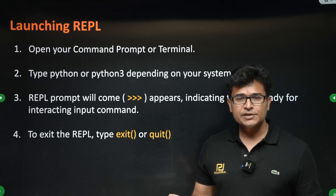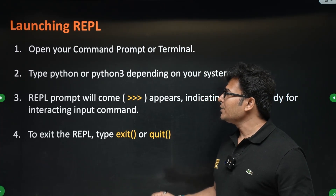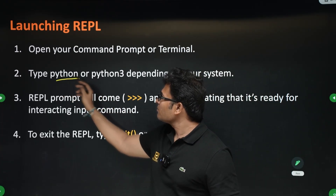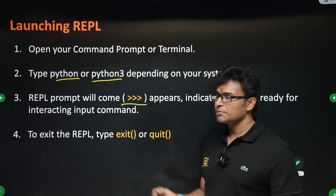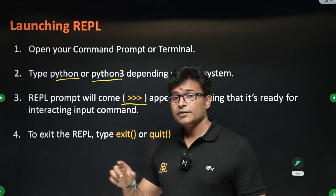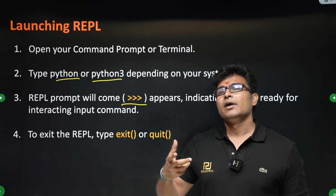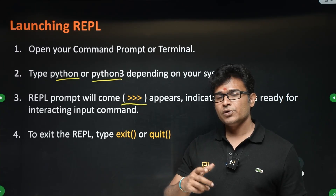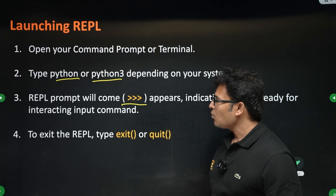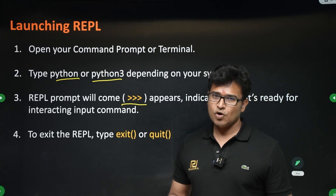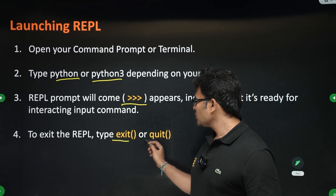On other operating systems, just Google how to open the command prompt. Once the command prompt is open, type 'python' or 'python3'. You will then get three greater-than symbols (>>>), which means REPL has started and you can give prompts there. Once you are done, you can exit REPL using 'exit' or 'quit'.